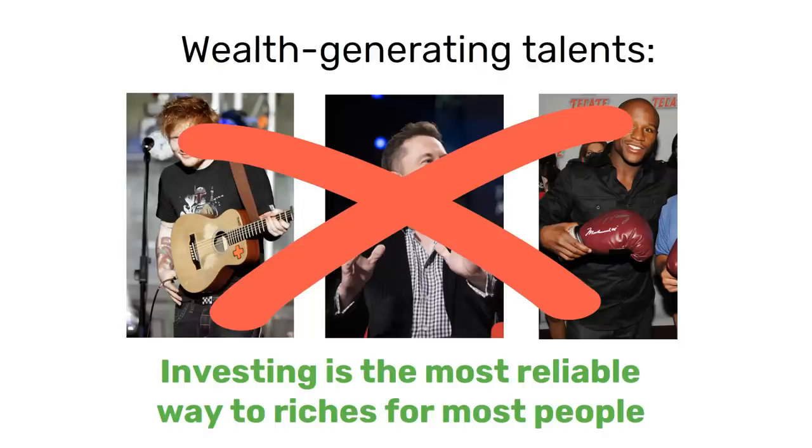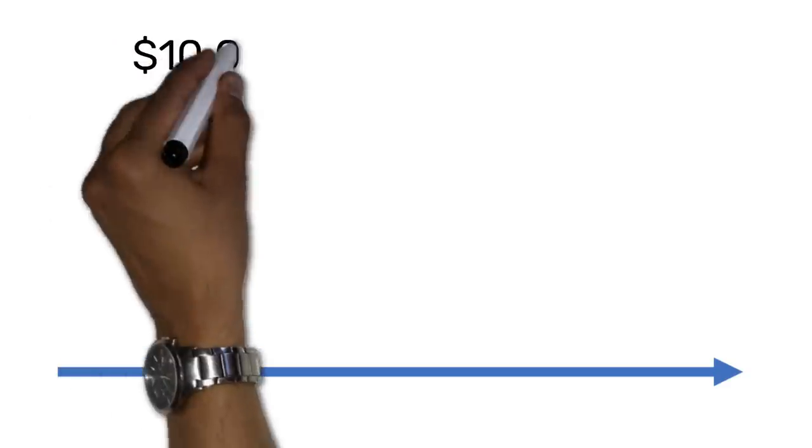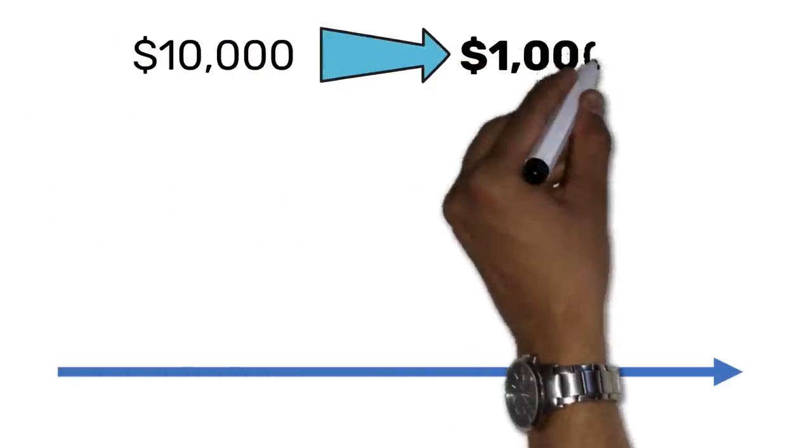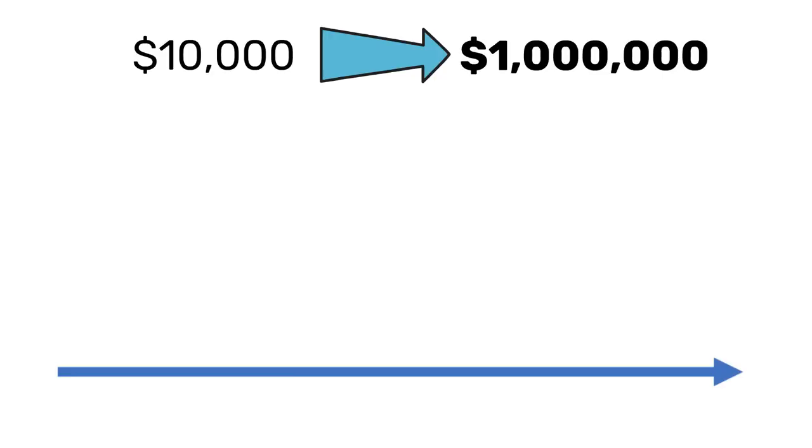And if there's one area within investing where the mathematics are truly mouth-watering, it is when you are looking for stocks that can return 100 to 1. $10,000 invested in a single 100 to 1 stock will turn you into a millionaire.